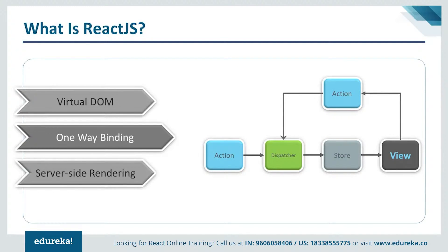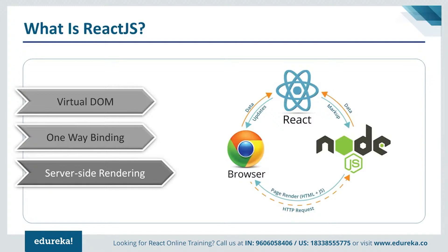Many major companies have adopted ReactJS, including Facebook, Yahoo, Google, Netflix, The New York Times, Walmart, and PayPal. They found value in the component-based development approach, where the entire UI is built as a set of small, reusable components. As a developer, you think about components first, build them, and then assemble the UI. These components are reusable across future implementations, saving significant development time.